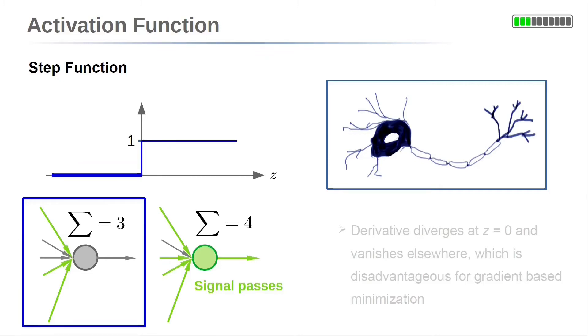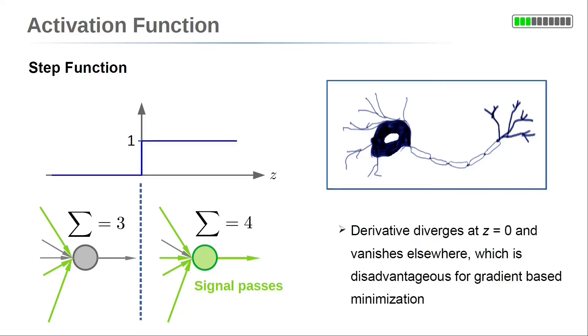The step function is zero in the left half, for z less than zero. This corresponds to no signal or no information passes the neuron. The step function is one, for z is greater than or equal to zero. This corresponds to a signal which is passed by the neuron. But the derivative of the step function diverges at z equal to zero. A function with a limited derivative might be more appropriate. Otherwise, parameter variations might diverge as well.